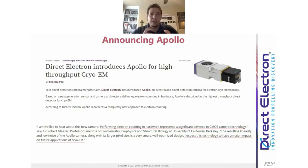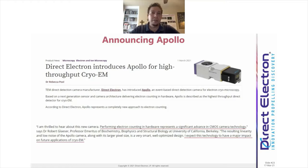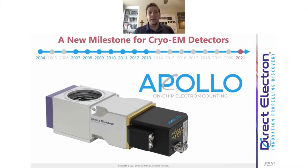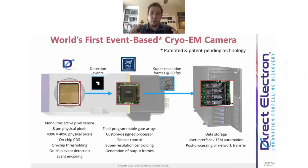To respond to this wish list and make the next leap forward, we announced the Apollo camera for cryo-EM — the world's first event-based monolithic active pixel sensor camera. We really believe this camera is going to be game-changing for cryo-EM because it represents a leap forward in detection capabilities, not just an incremental improvement. We believe 2021 is a milestone year, similar to 2010-2011 when the first cryo-EM structures came from direct detectors, and 2013 when the first near-atomic resolution structure came out with electron counting.